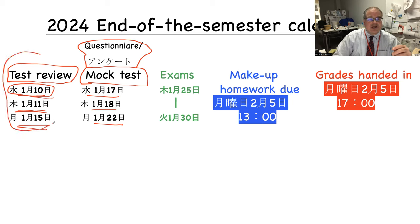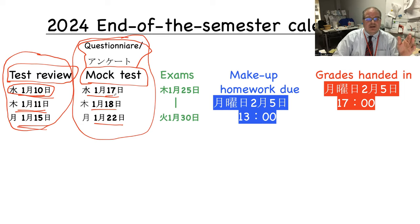So one more time, test review is this week - ichigatsu toka, juichi nichi to juugo nichi. Anket to renshu no teki shikan wa junananichi, juhachi nichi, nijuninichi. And then exams, teki shikan will be ichigatsu nijugo nichi no mokyo bi kara kayo bi, ichigatsu no sanju nichi.